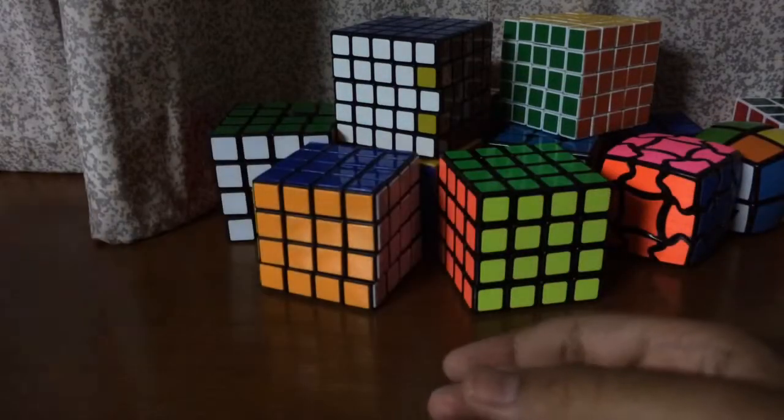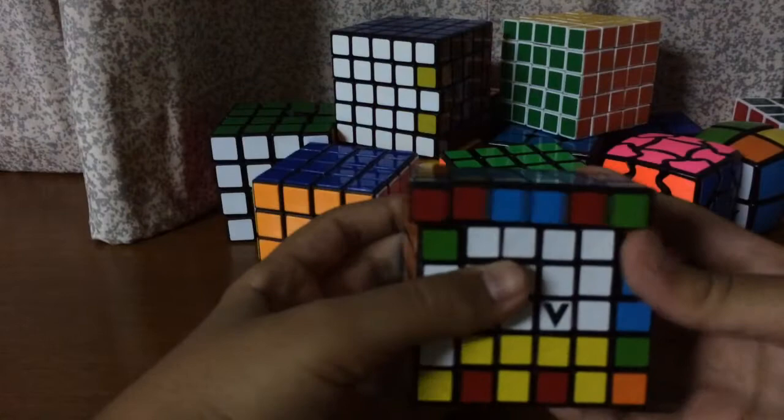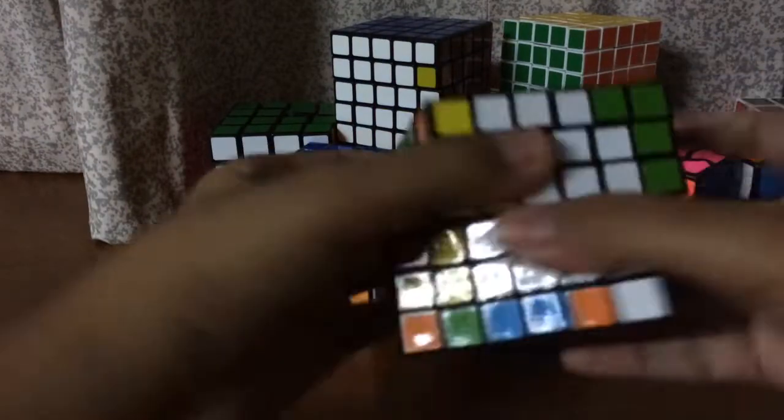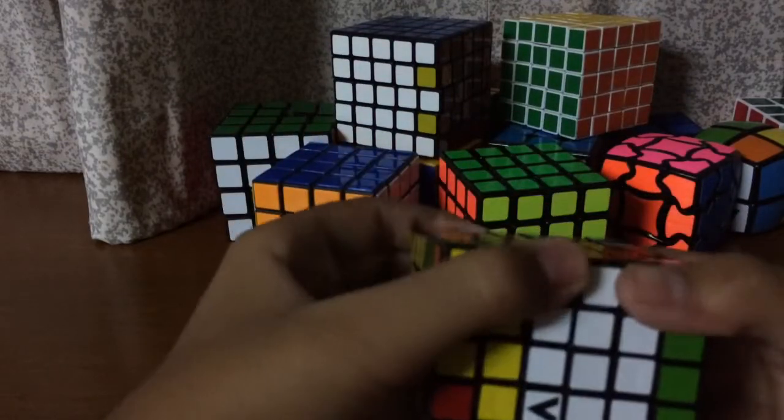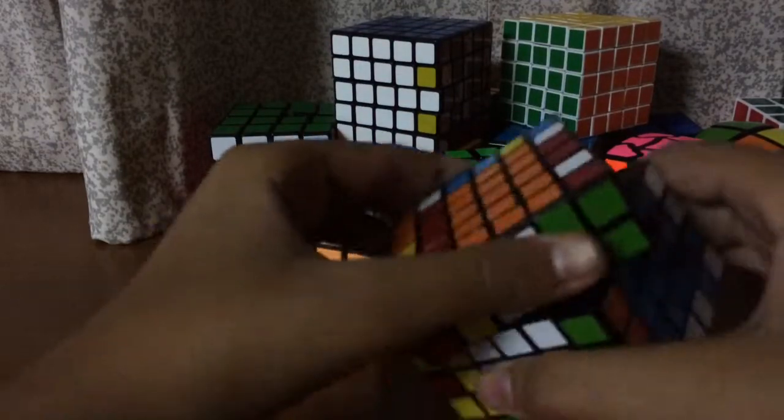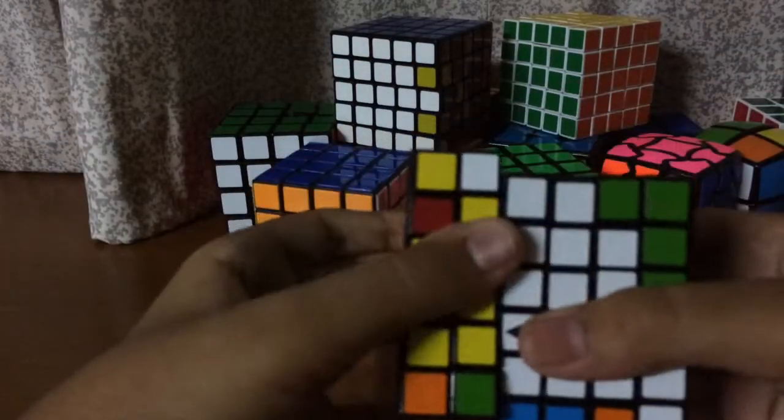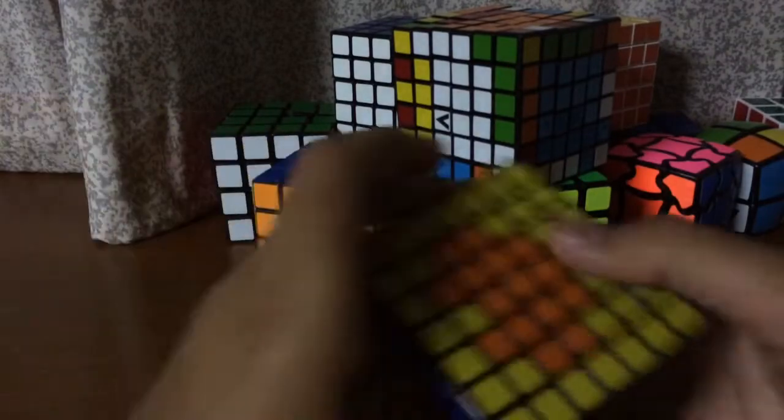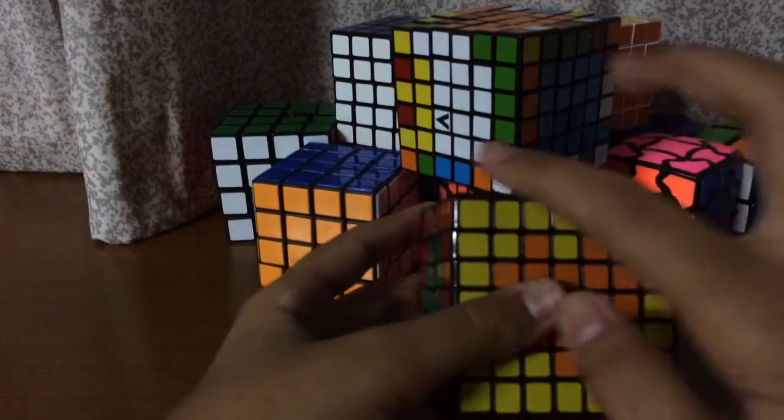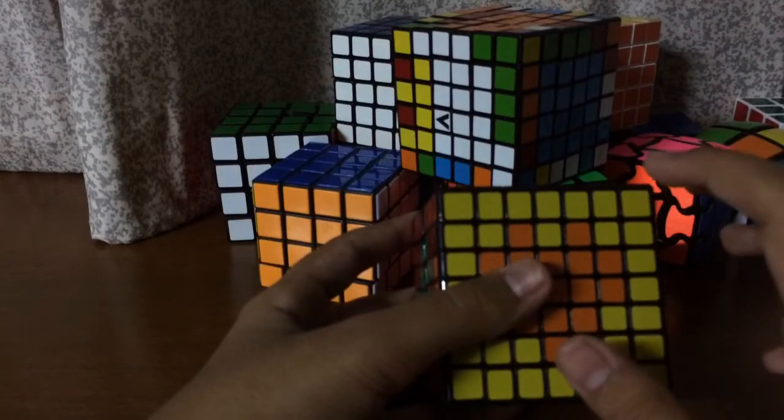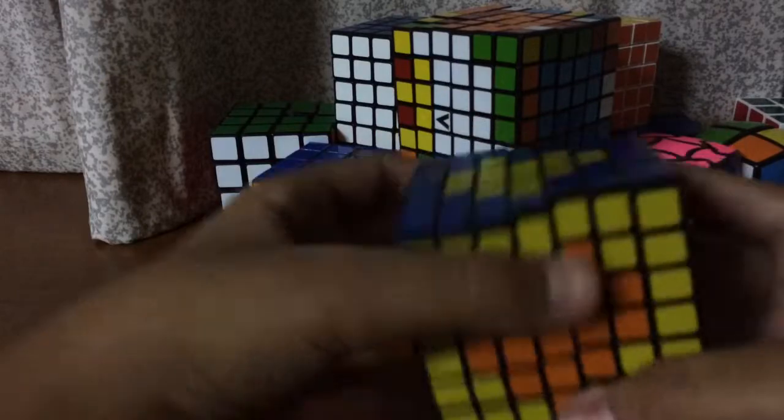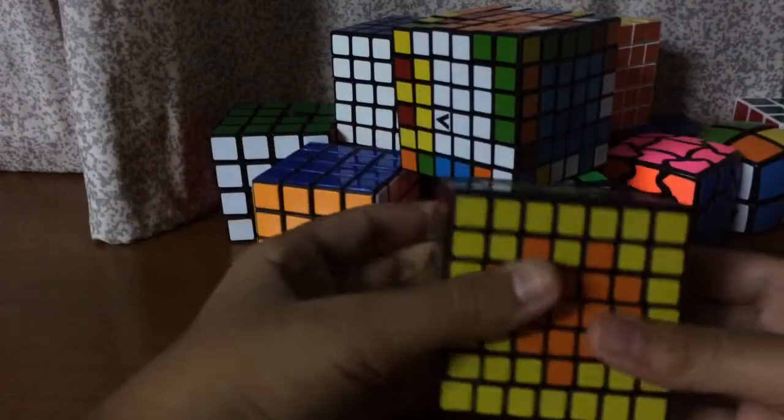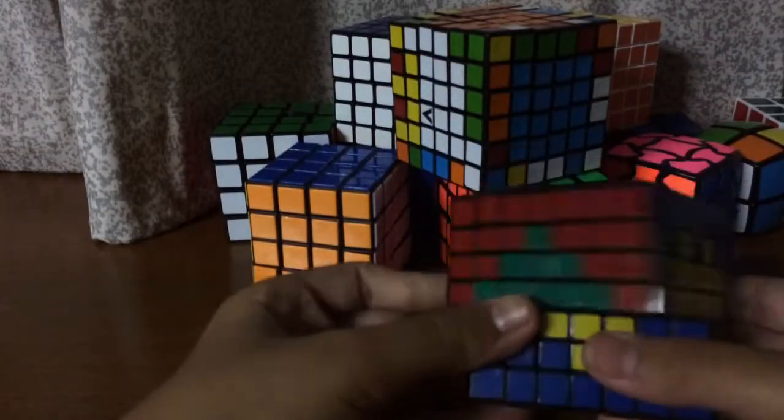This one, V cube 6x6. Also I don't have it, I don't know how to solve it, and second it doesn't move very good, it's like this. And next this is 7x7, wait, 1, 2, 3, 4, 5, 6, 7, yes 7x7. I love this pattern so I did it.